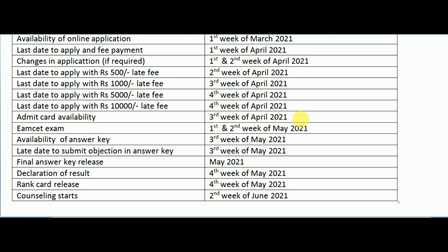Admit card will be available for students from the third week of April. MSET exam will be conducted between the first and second week of May 2021. Answer key will be available in the third week of May 2021. Last day to submit objections to the answer key is the third week of May 2021. Final answer key will be released in May 2021. Declaration of results and rank card release will be on the fourth week of May 2021. Counseling will begin from the second week of June 2021.